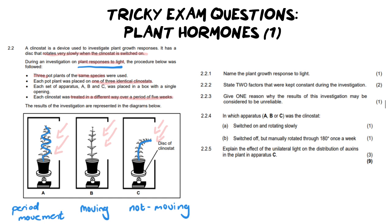This breaking down is important because in the questions, you need to know which setup matches which outcome. Looking at the first question: name the plant growth response to light. We all know this is testing phototropism — easy one.